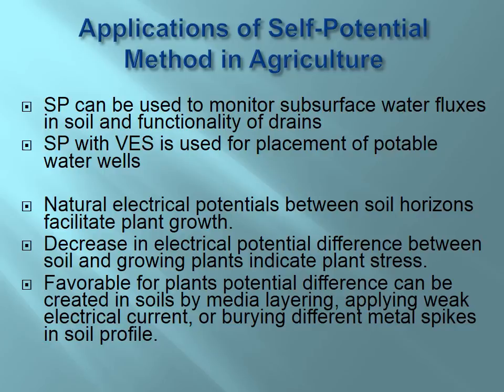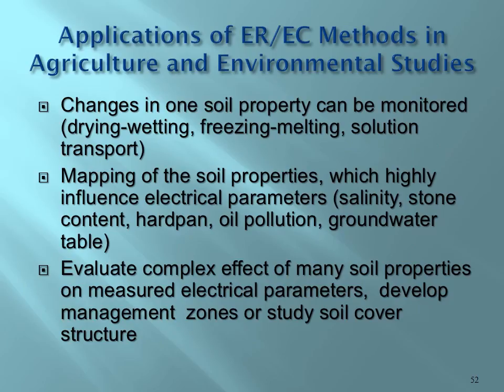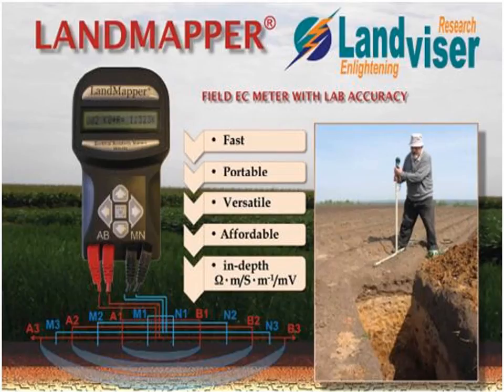We can also create favorable potential differences in soils by media layering, applying weak electrical current, or inserting different metal spikes in soil profiles. EC methods in agriculture can monitor a single soil property that changes resistivity dramatically, such as in freezing-melting cycles, solution transport, or drying-wetting cycles. We can also map soil properties that highly influence electrical parameters — such as salinity, stone content, hardpan, oil pollution, and groundwater table — and evaluate the complex effect of many soil properties on measured electrical resistivity to develop management zones or study soil cover structure.